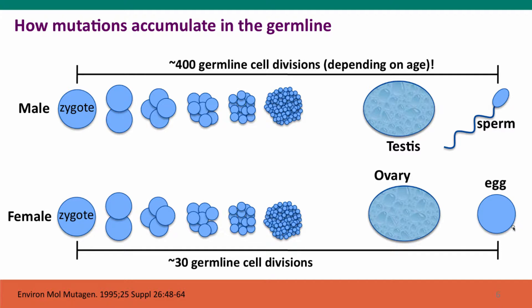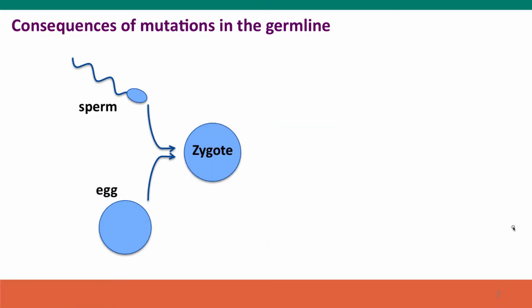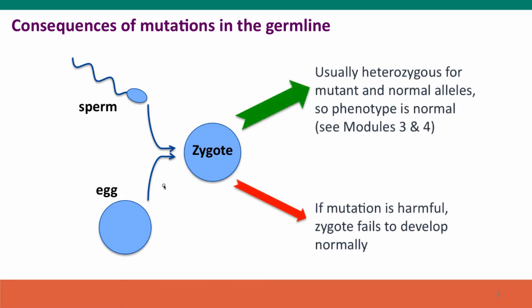What about the consequences of these mutations? Most of the new mutations that we inherit don't cause us any problems at all. When the egg and sperm fuse they create the zygote, which is diploid. Usually the zygote, even if it inherits a mutation that inactivates a gene, is normal because it's heterozygous — it has one copy of the normal gene and one copy of the mutant gene, and therefore its phenotype is usually normal. Rarely, if the mutation is directly harmful, the zygote won't develop at all.